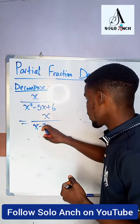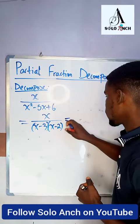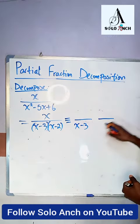When you factorize it, you're going to have x minus 3 and then x minus 2. Now to decompose this, we'll just write this as that, then we put the first factor here x minus 3 and then the other factor here x minus 2.